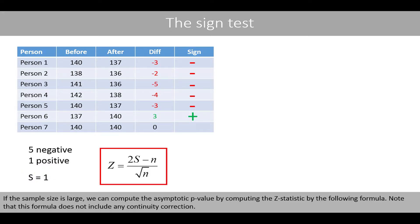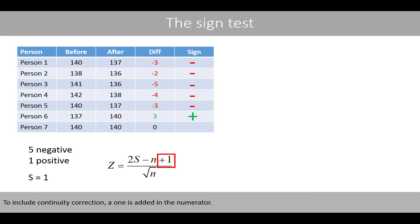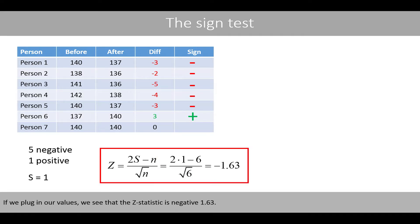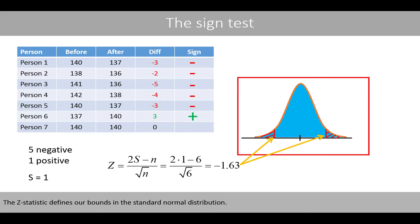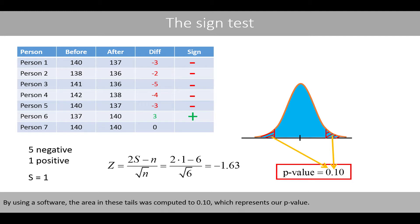If the sample size is large, we can compute an asymptotic p-value by computing the z-statistic using the following formula. Note that this formula does not include a continuity correction; to include continuity correction, a 1 is added in the numerator. Plugging in our values, the z-statistic is negative 1.63, which defines our bounds in the standard normal distribution. Using software, the area in the two tails gives a p-value of 0.1.